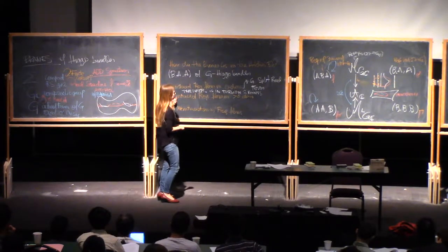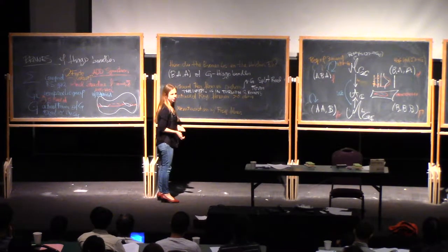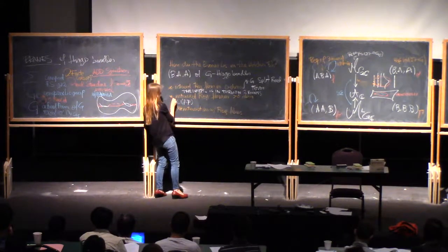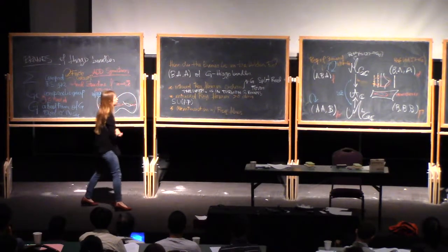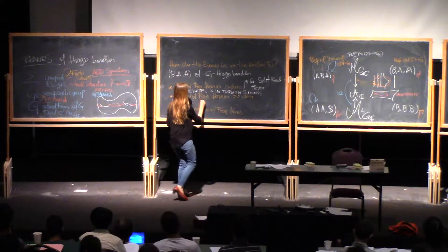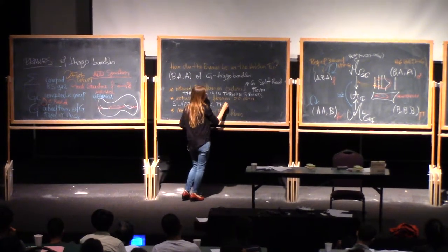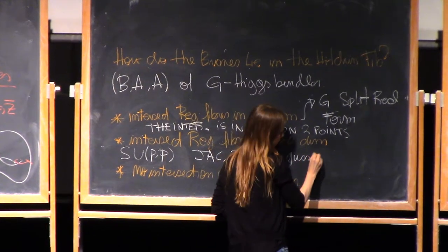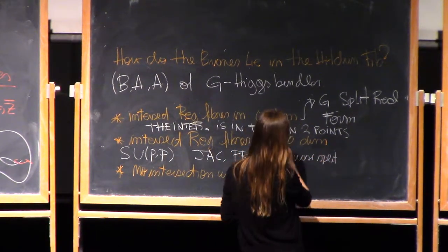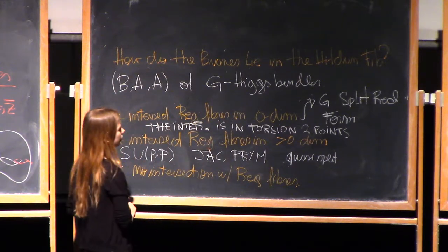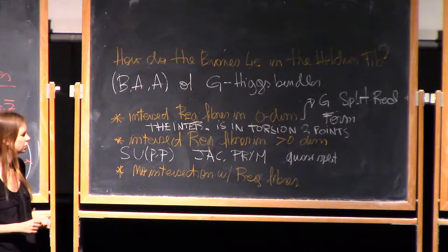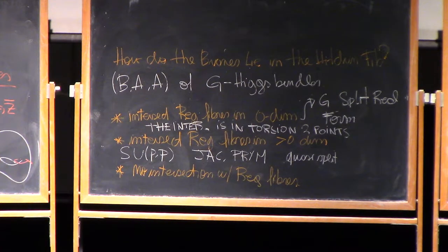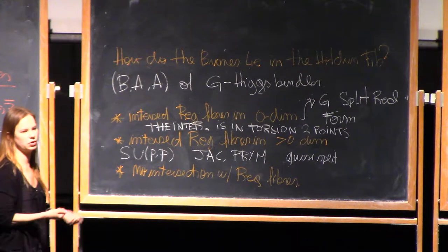Now, there are some branes that intersect with positive dimension. We mentioned yesterday a case: we looked at U(p,p) Higgs bundles and SU(p,p) Higgs bundles, and we saw that those intersect in positive dimension — they intersect in Jacobian varieties or in Prym varieties. But there's actually not much more than that. It's actually quasi-split real forms that will have this intersection in abelian varieties of positive dimension. And when they don't intersect, it gets a bit more complicated because you can't use Hitchin's construction from 1987 — you can't use his papers on abelianization, because those are for the regular fibers.